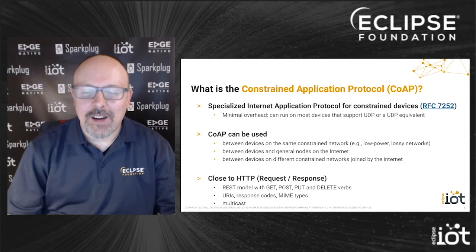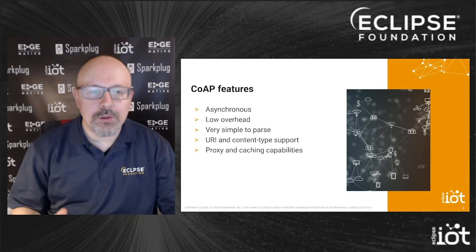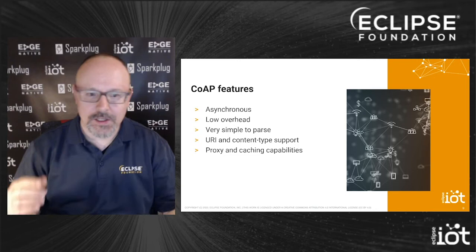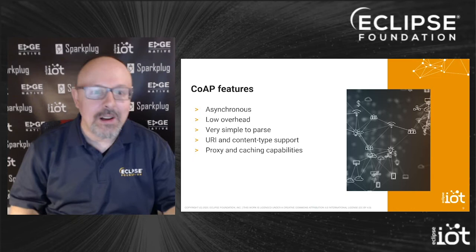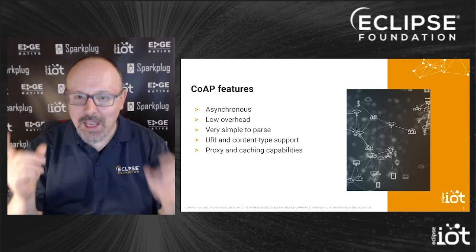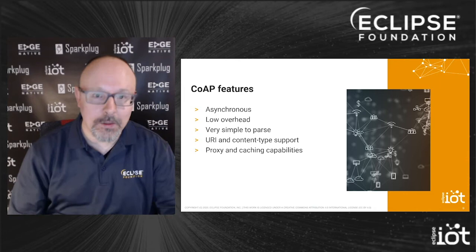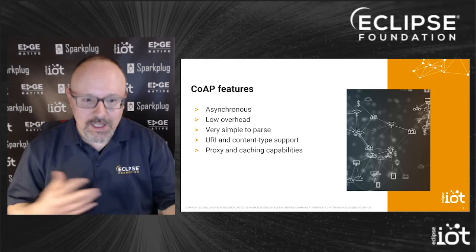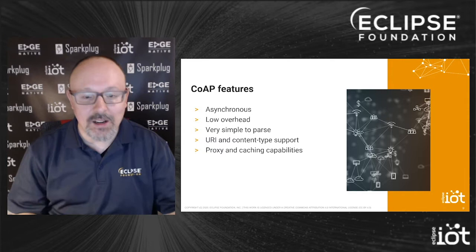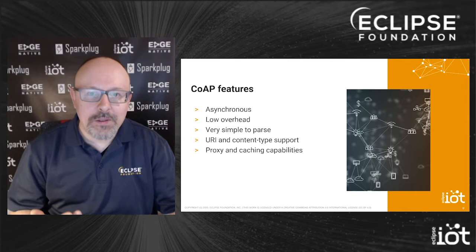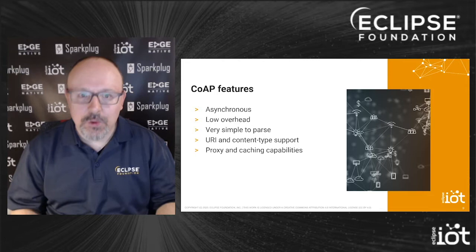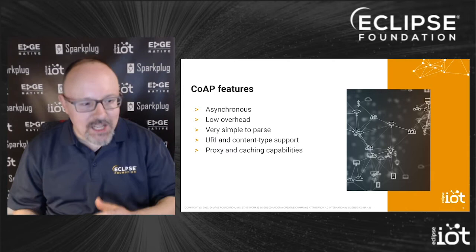At a deeper level, everything CoAP does is asynchronous — you send a message and execution continues right away. Low overhead is a big concern, since it runs on top of UDP, and headers are typically only about four bytes long. That's fairly compact compared to many protocols used in the data center. Payloads and messages are simple to parse because they replicate what you find in HTTP. Many HTTP-like techniques are available: URI, content type support, proxy, and caching.